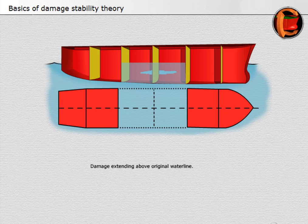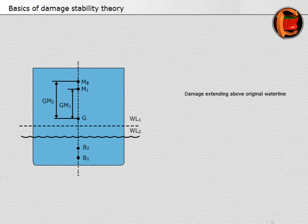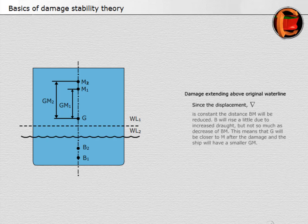Damage extending above original water line: if the damaged compartments extend above the water line, they will cut a hole in the water plane area and reduce the moment of inertia. Since the displacement is constant, the distance BM will be reduced. B will rise a little due to increased draft, but not so much as the decrease of BM. This means that G will be closer to M after the damage, and the ship will have a smaller GM.